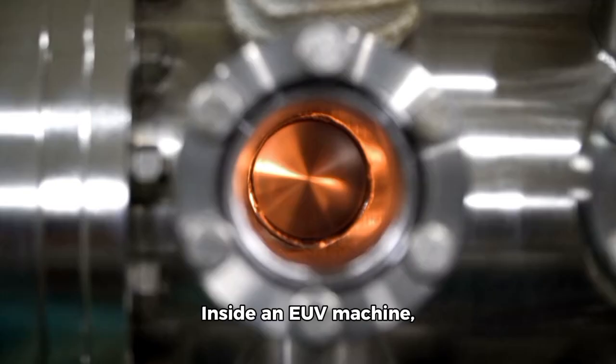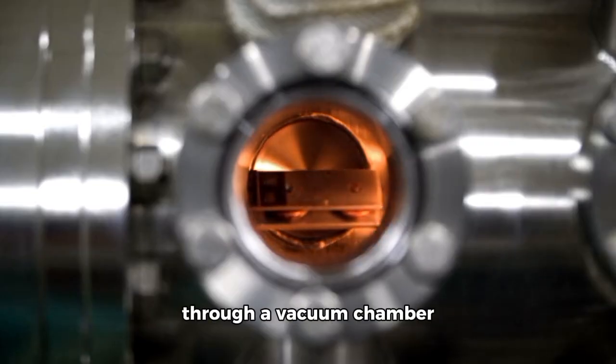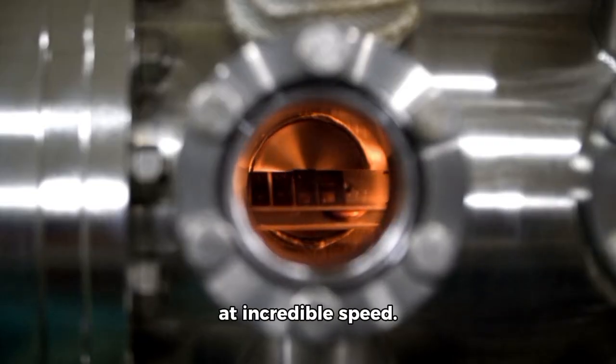But where does light that tiny come from? This is where things get insane. Inside an EUV machine, microscopic droplets of molten tin are fired through a vacuum chamber at incredible speed.